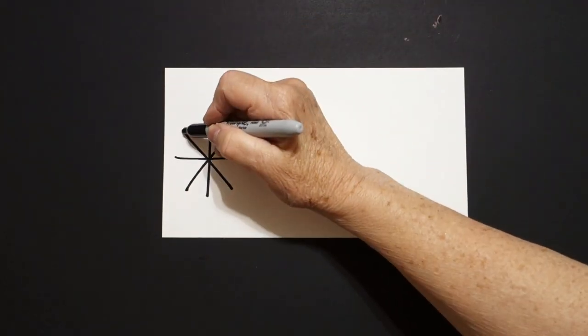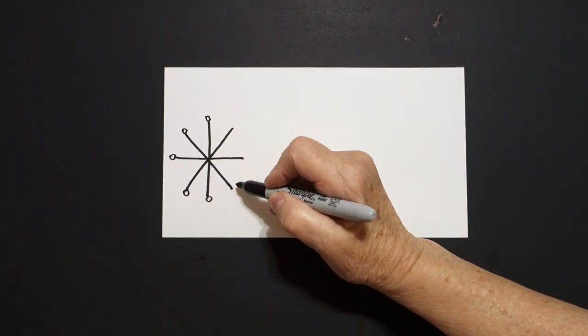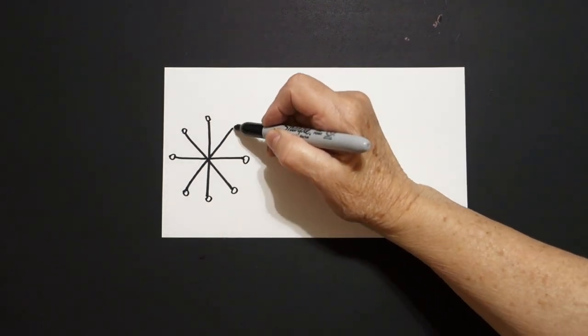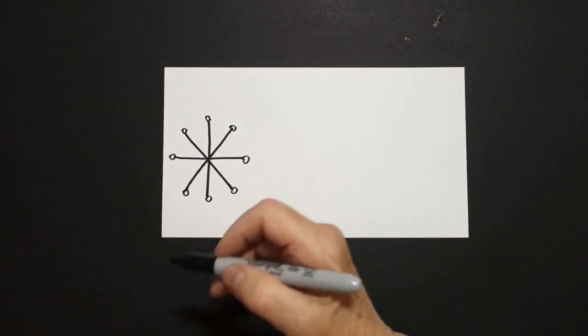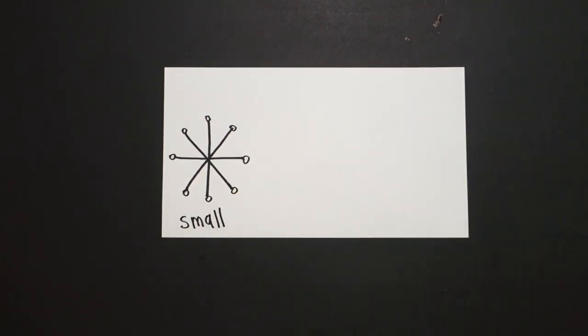At the end of each one of our straight lines, we're just going to draw baby circles. Baby circle, baby circle. This is a small snowflake.